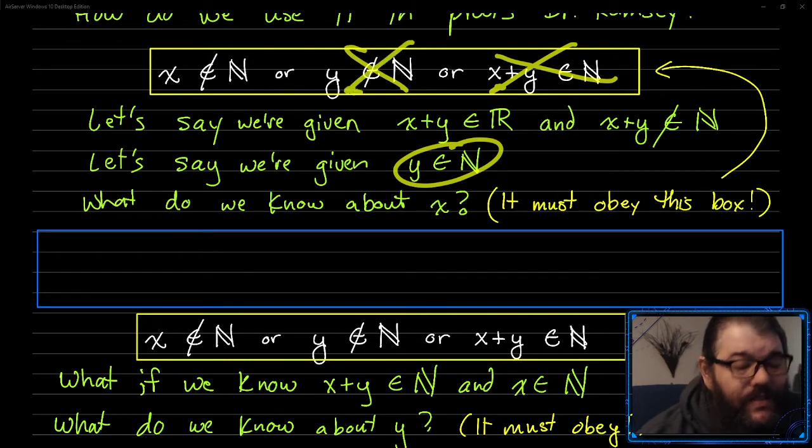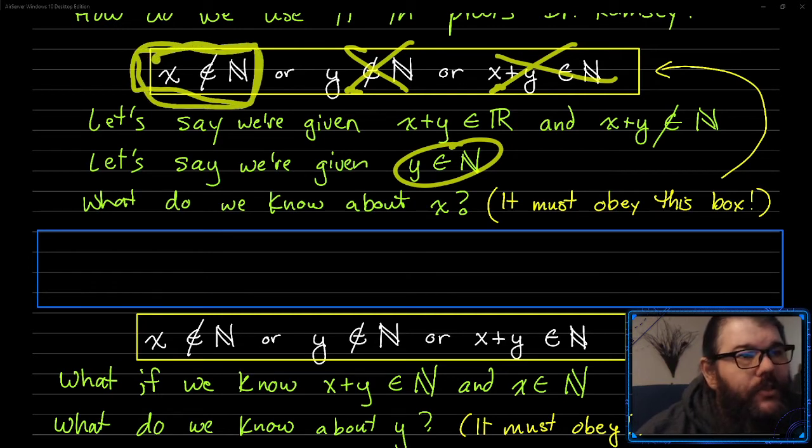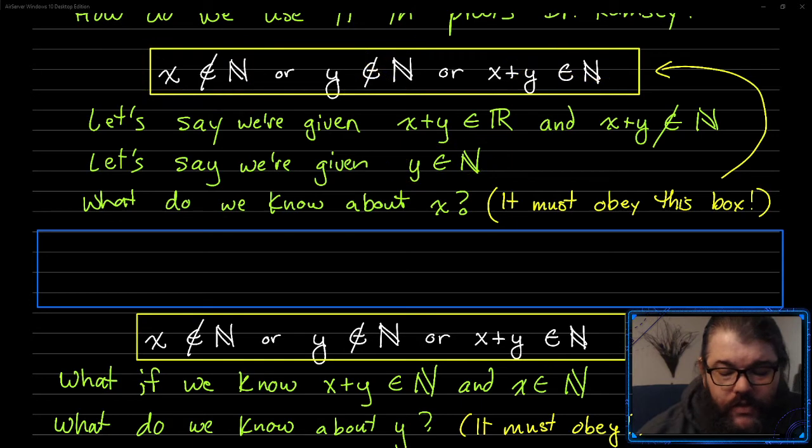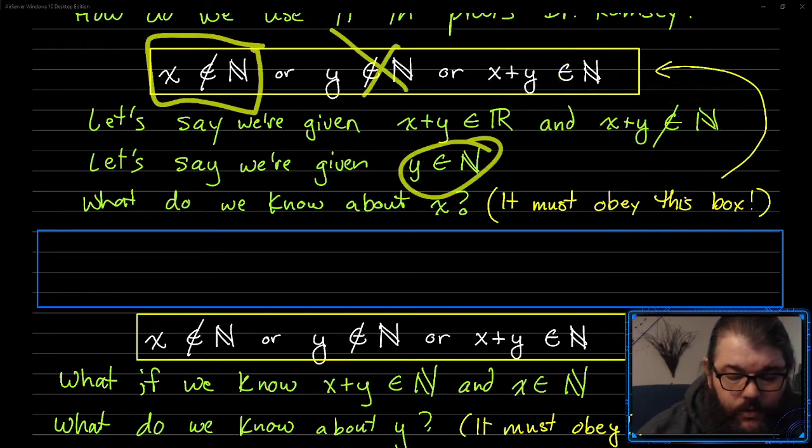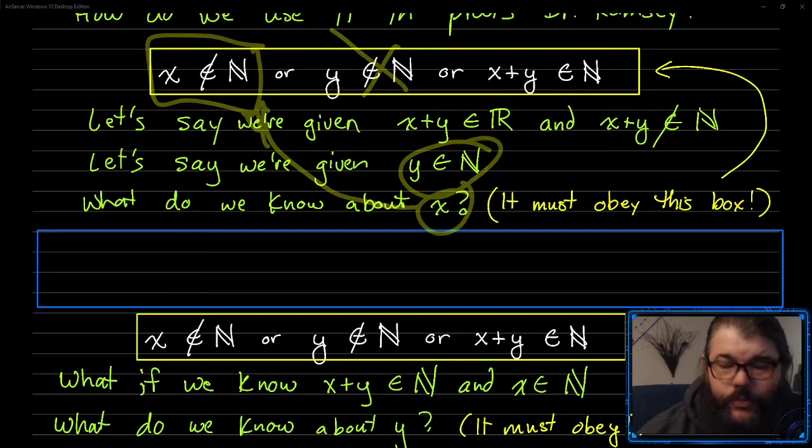And because this yellow box exists, that forces us to know that this part must be true for this logical expression to be true, because you have true or false or false. And so you can use that in proofs. So if you know that x plus y is not natural, and you know that y is natural, then this thing must be true. So we learn that x is not natural, which is super cool.